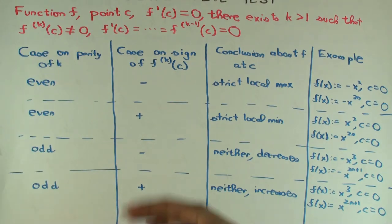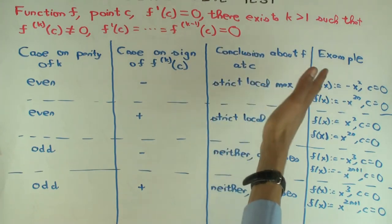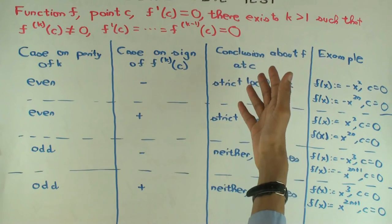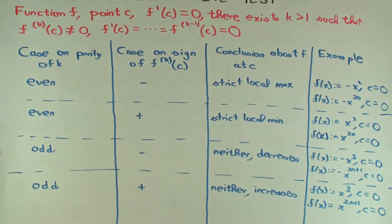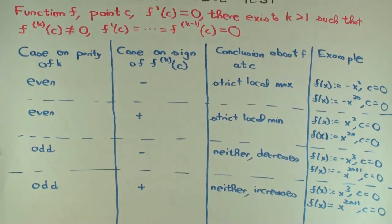So actually, you can start out doing this test just as if you're doing the second derivative test. And if you get in the second derivative equals zero case, then you sort of switch gears and move to this test. So you can start out with the second derivative test and then change to this if that fails.